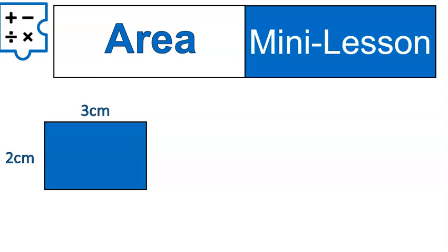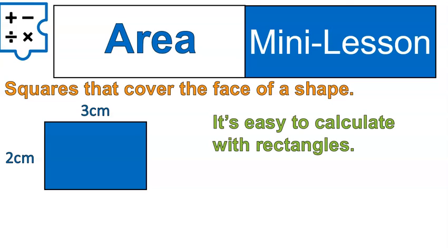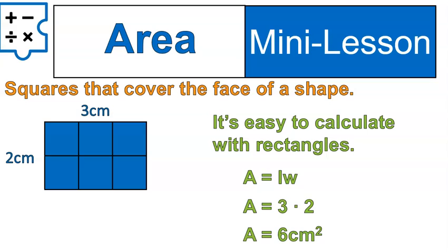First off, what is area? Area is basically the squares that cover the face of a shape. It's easy to calculate when you're looking at rectangles. You do length times width, and I'll show you how that would look. It would look just like this. So you see how many squares there are to cover it? We're basically doing three times two is six, or you can just count the squares if it's small, but you can see it very clearly when it's working with a rectangle.